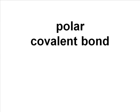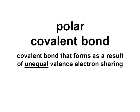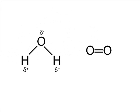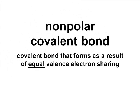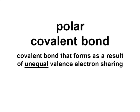This is what we call polar covalent bonding — covalent bonding that results from unequal valence electron sharing. Because oxygen hogs the electrons, they spend more time with the oxygen and less with the hydrogens. Oxygen carries a partial negative charge, the hydrogens carry a partial positive charge, and the result is polarity in the molecule. As a reminder: water on the left is a polar covalent bonding situation, and oxygen gas on the right is nonpolar covalent bonding, which results from equal electron sharing.